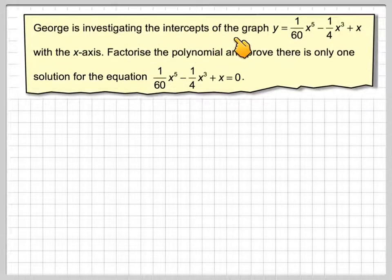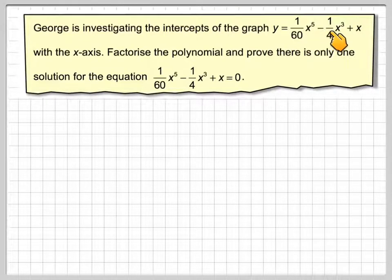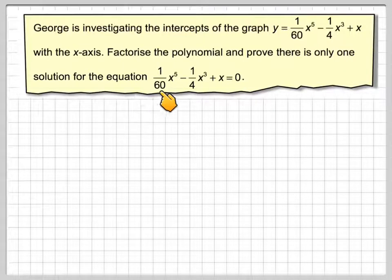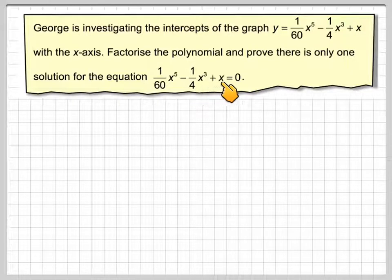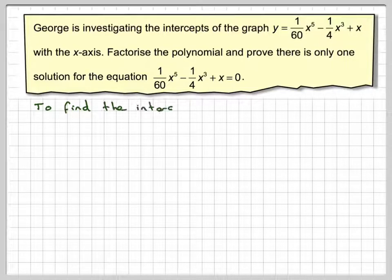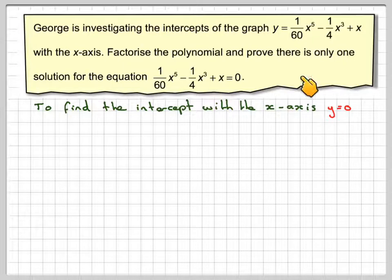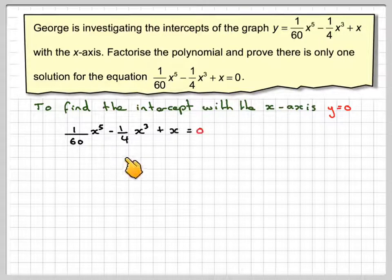George is investigating the intercepts of the graph of y = (1/60)x⁵ - (1/4)x³ + x with the x-axis. We need to factorise the polynomial and prove that there is only one solution to the equation (1/60)x⁵ - (1/4)x³ + x = 0. To find the intercept with the x-axis we must put y = 0, which is why we must solve this equation.